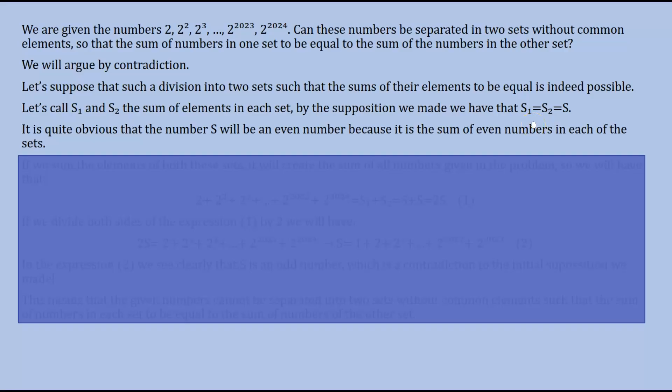It is quite obvious that the number S will be an even number, because all the elements in the sum of S₁ and S₂ are all even numbers. And of course, the sum of even numbers is an even number also. So S₁ and S₂, which are equal to S, will be an even number.